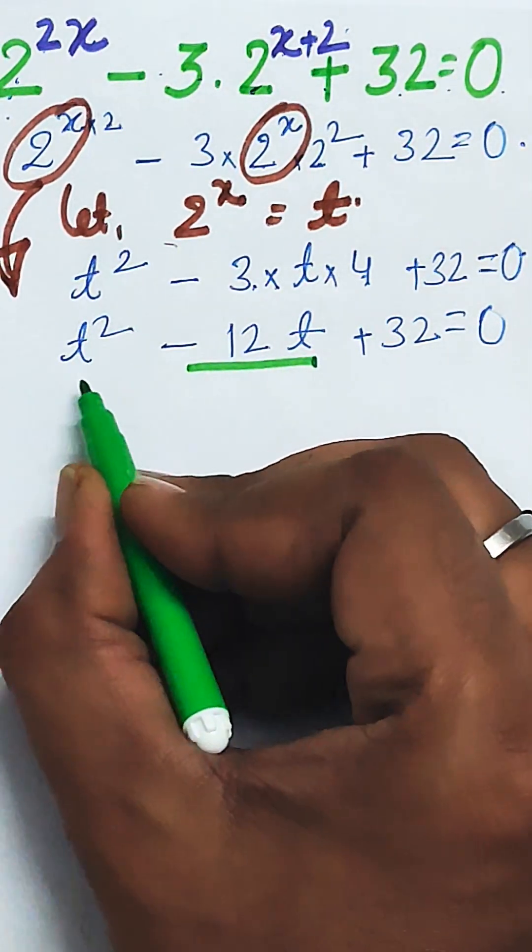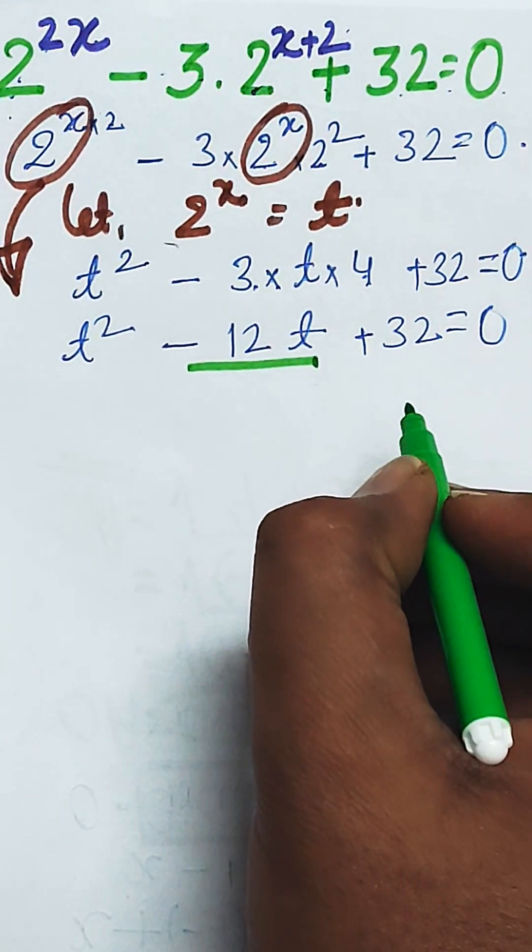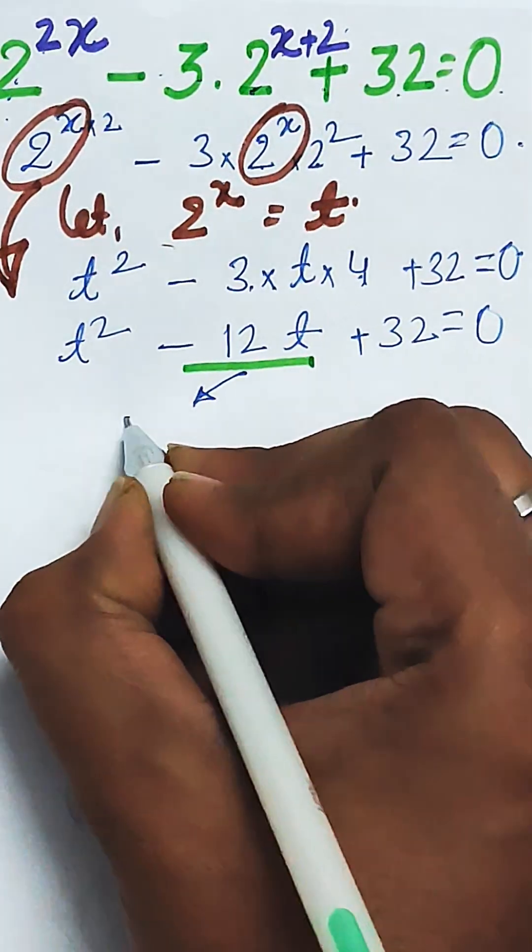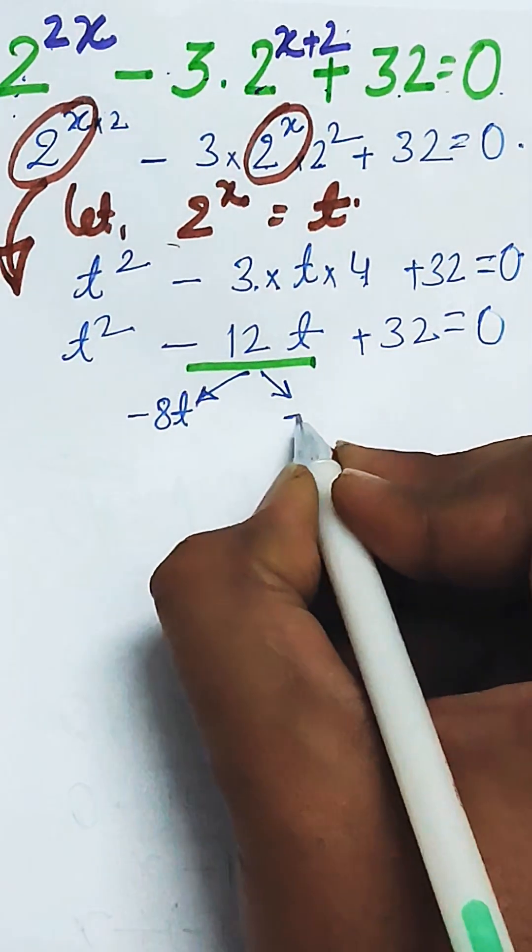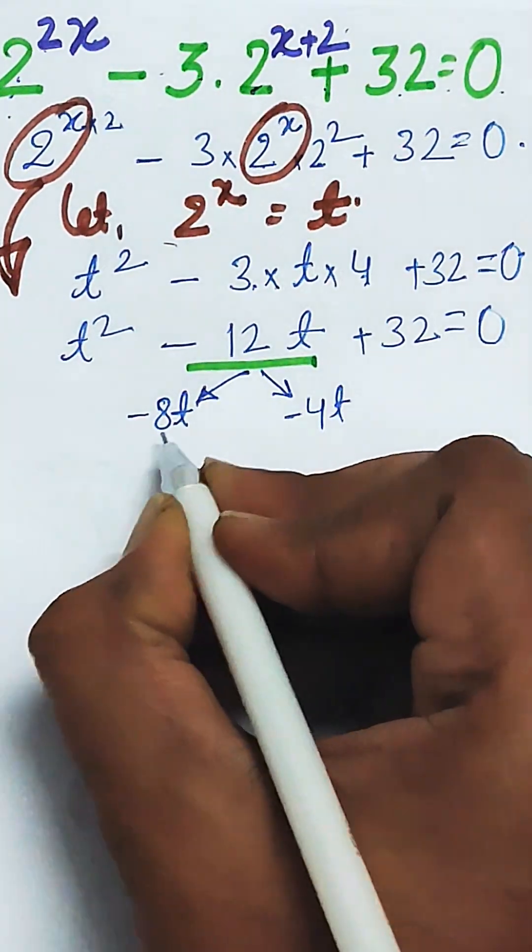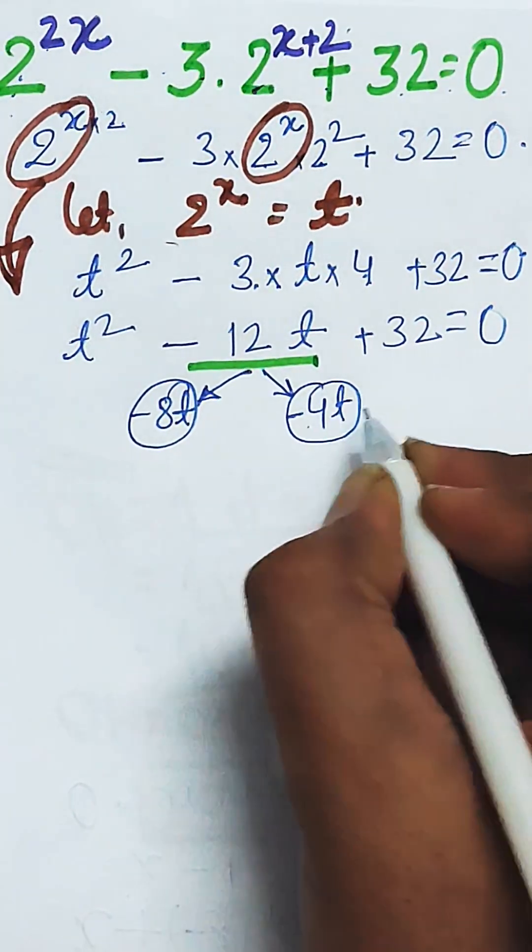So the middle term of the above quadratic equation in t needs to be split. It can be split as minus 8t and minus 4t, so that when you multiply this minus 8t with minus 4t,